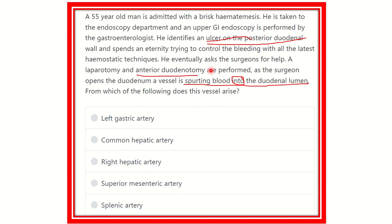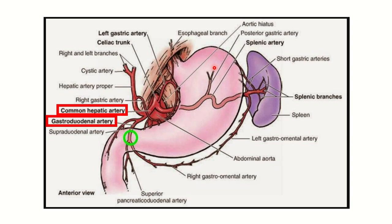We focus on the posterior wall of the first part of the duodenum. We need to identify the blood vessel running behind the posterior duodenal wall. Here we can see the first part of the duodenum — this is where ulcers typically occur. There is a vessel running just behind this first part of the duodenum, and the name of that artery is the gastroduodenal artery.